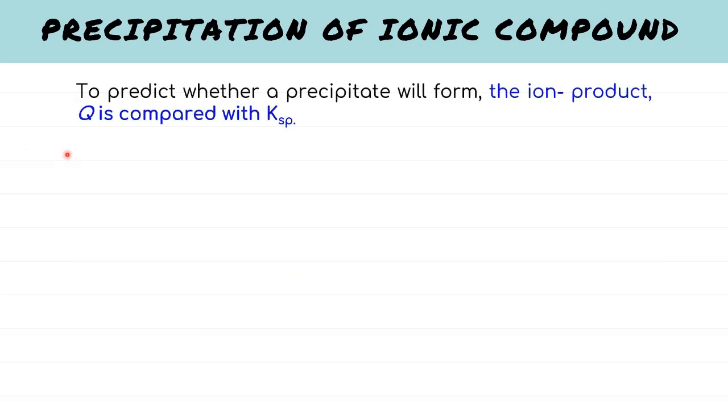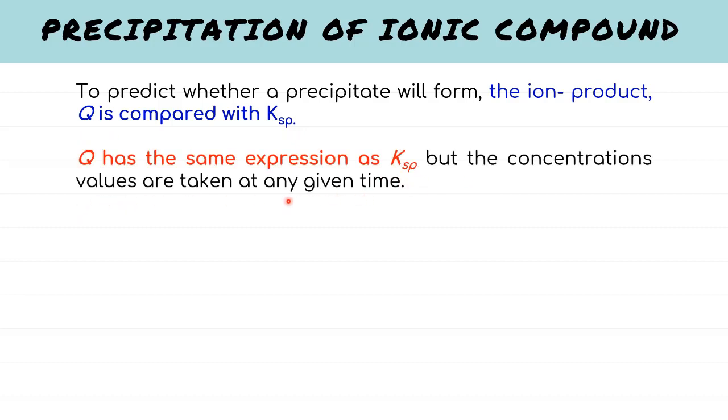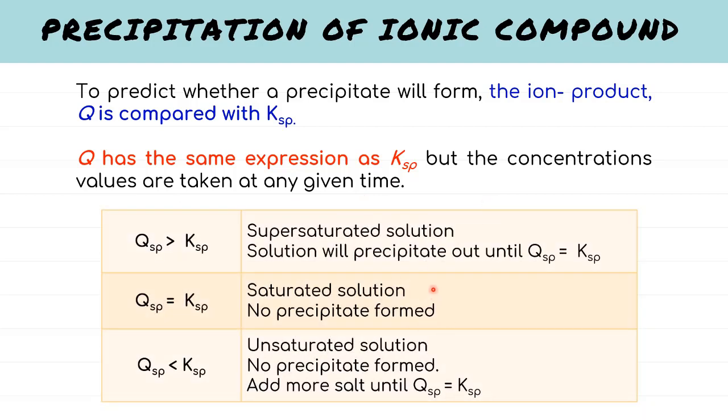To predict whether a precipitate will form, the ion product Q is compared with Ksp. This Q has the same expression as Ksp, but the concentration values are taken at any given time. As mentioned earlier, saturated solution is where both dissolved and undissolved solutes are in equilibrium, so we have this relationship of Q equal to K. For a solution containing higher concentration of solute than the solubility, we could say Q is greater than K, it means the solution is supersaturated. A supersaturated solution may be induced to come to equilibrium by precipitation. For a solution containing lower concentration of solute than the solubility, we have Q less than K value, they are said to be unsaturated. Unsaturated solutions may be induced to come to equilibrium by adding more salts to the solution until they become saturated again.